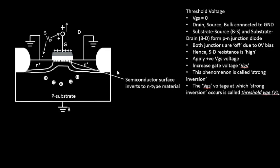The voltage at which strong inversion happens is referred to as the threshold voltage. As mentioned in previous videos, threshold voltage is the voltage at which the transistor turns on. At this point, you have provided a channel for current to flow from source to drain, and once that current flows, your transistor turns on.